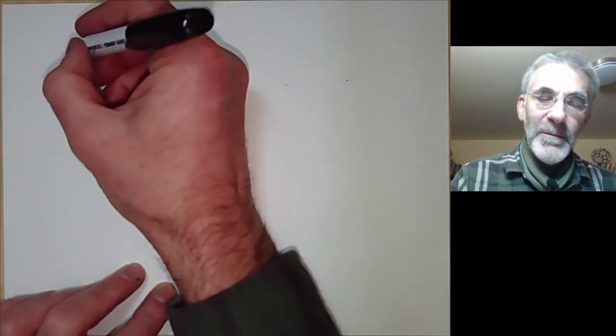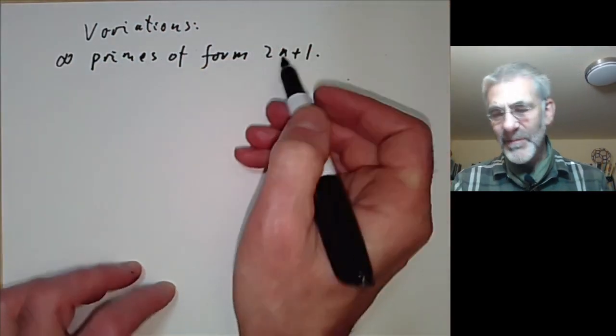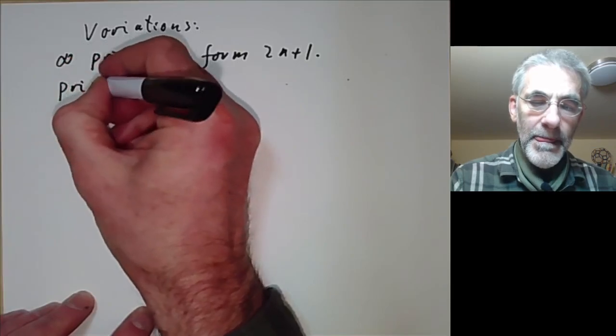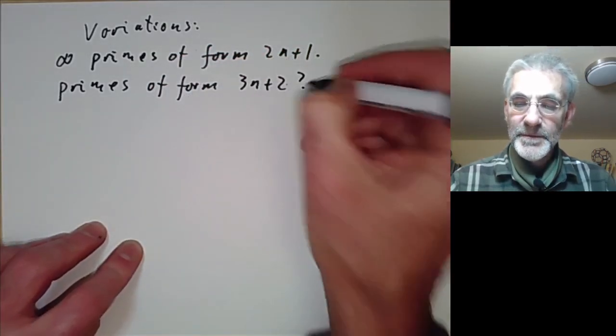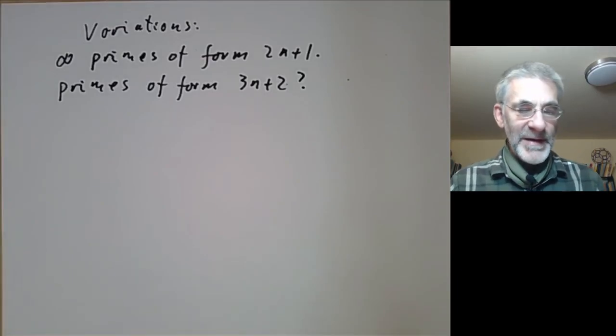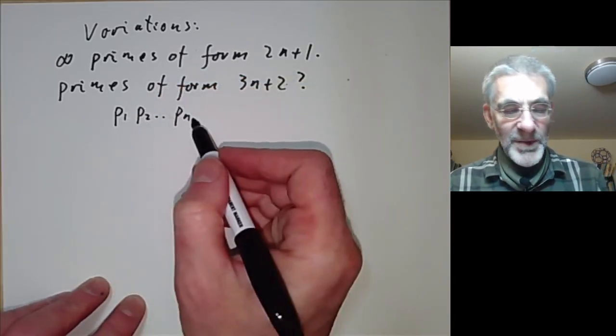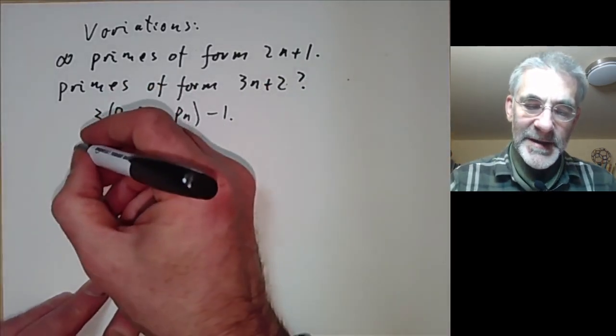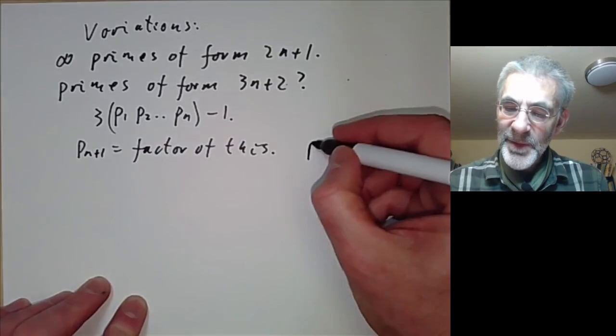So first of all we can find infinitely many primes of the form 2n plus 1. Well that's completely trivial that just means odd primes and they're all odd apart from 2. What about primes of the form, well instead of 2n plus 1 what about 3n plus 2? Can we find infinitely many primes like that? Well we can by doing a minor variation of Euclid's method. What we do is suppose we found lots of primes p1, p2 up to pn. What we do is we multiply them all together and then instead of adding 1 we multiply this by 3 and subtract 1. And let's take pn+1 to be a factor of this. And then just as in Euclid's proof we can see that pn+1 is not equal to p1 up to pn.